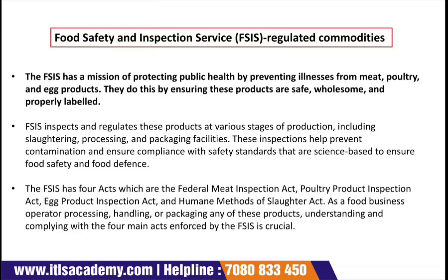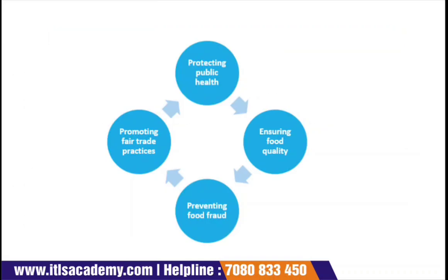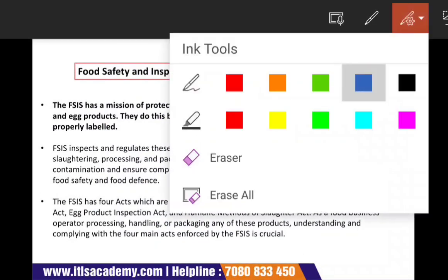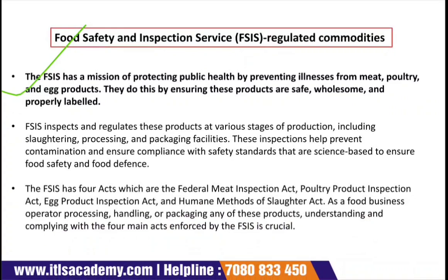FSIS has a major mission: protecting public health by preventing illness from different types of food items like meat, poultry, and egg products. This is important for exams and interviews — the basic principle behind FSIS is protecting the public health by preventing illness from meat, poultry, and egg products. They do this by ensuring that these products are safe, wholesome, and properly labeled through regulatory oversight.